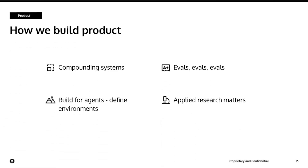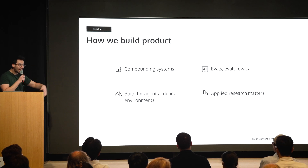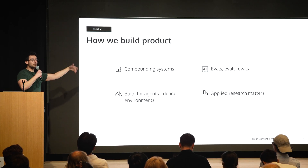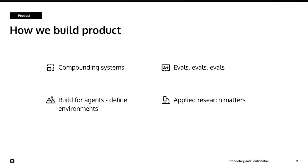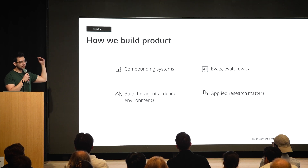How Basis builds product — a couple of things that matter a lot. Number one: you want compounding systems. We think about building horizontal layers so that as the models get better and as your context management improves, the environments you're building allow agents to do more and more types of work — rather than building for workflow A versus B versus C. Second: evals, evals, evals. I know there's been some discourse on Twitter, but you are not a serious person if you're doing production work for real customers paying real money and you don't have massive amounts of evals. That is the key to building extremely competent agents at scale.